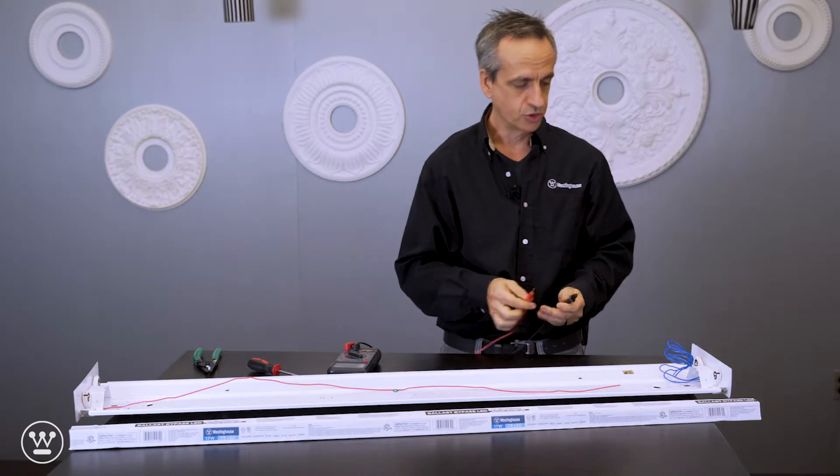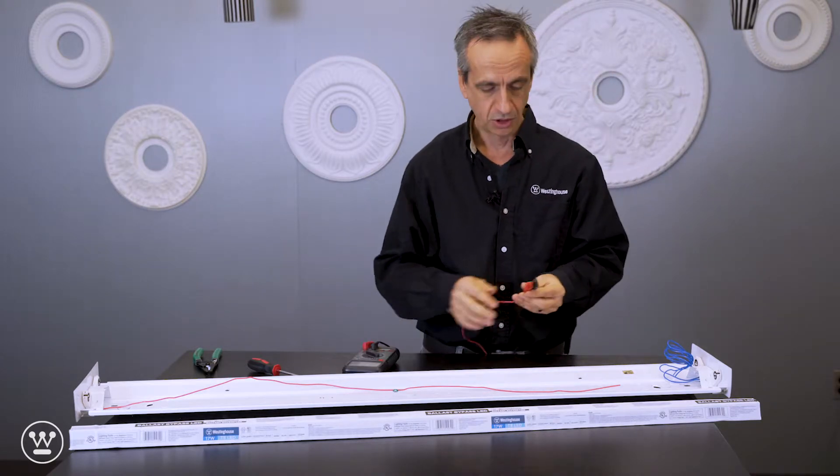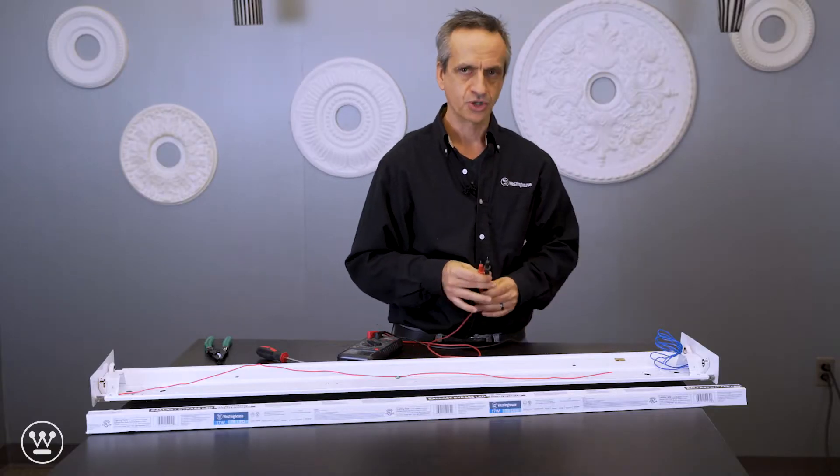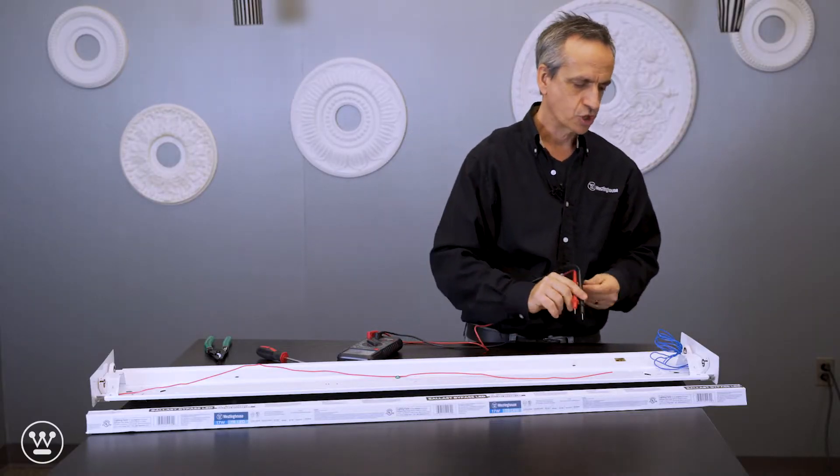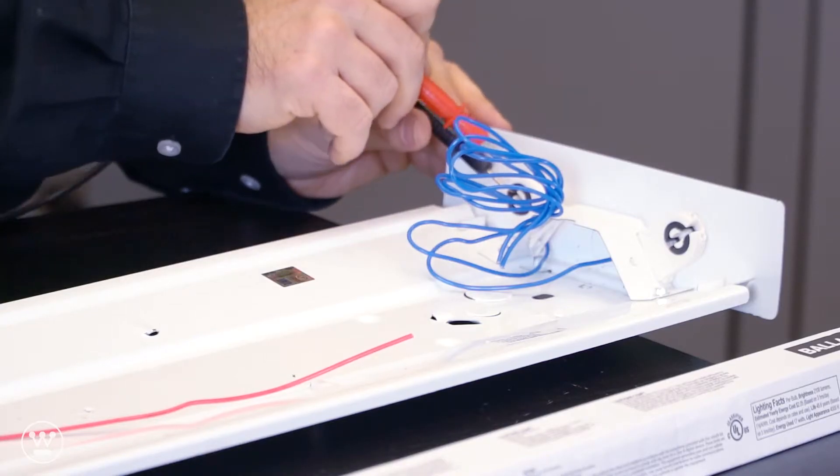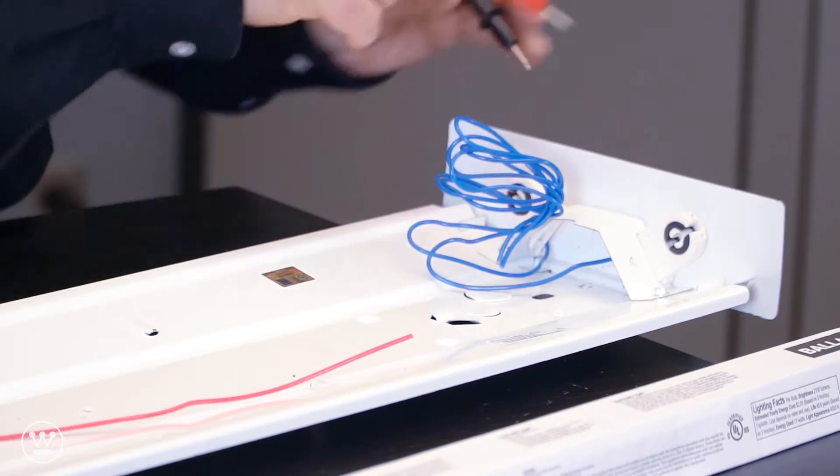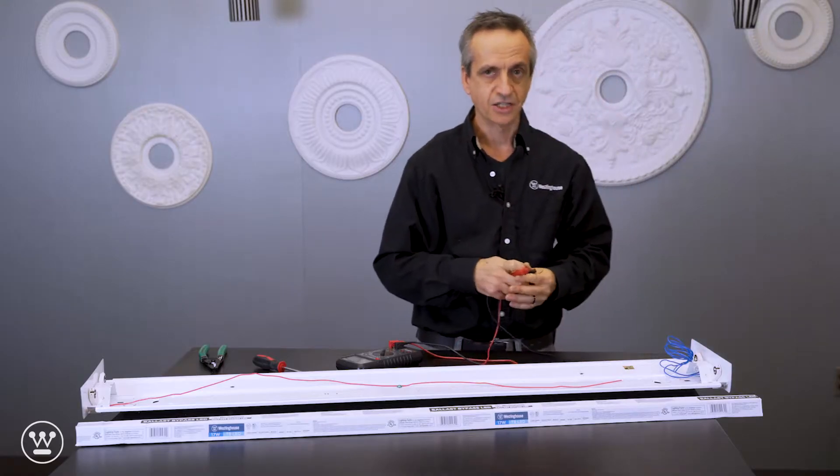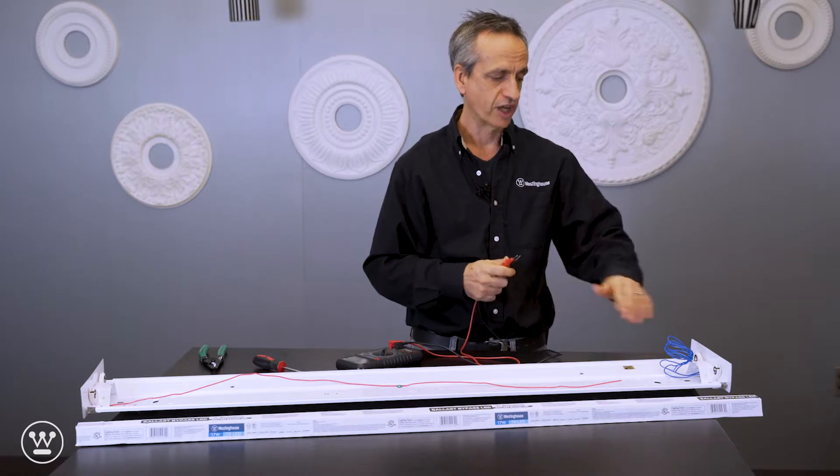The best way to do that is with a meter, checking for continuity. We're going to check for continuity on the tombstones or sockets. We want to make sure that these are non-shunted, meaning non-continuous. These sockets or tombstones are shunted, so we're going to have to replace them.